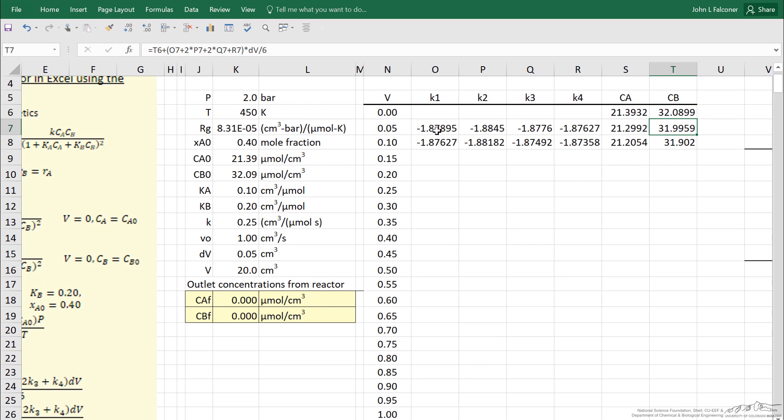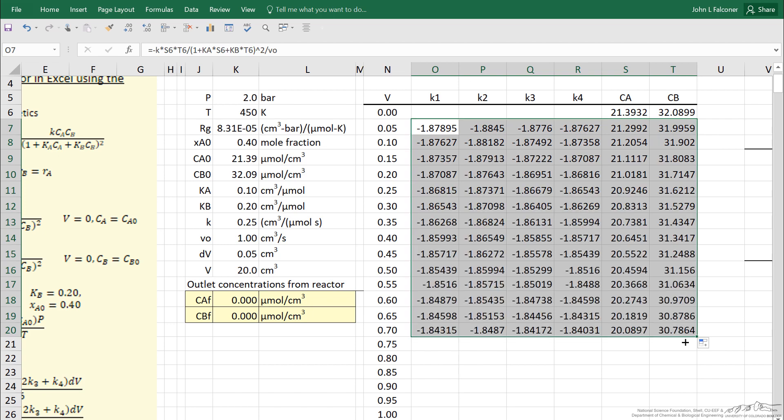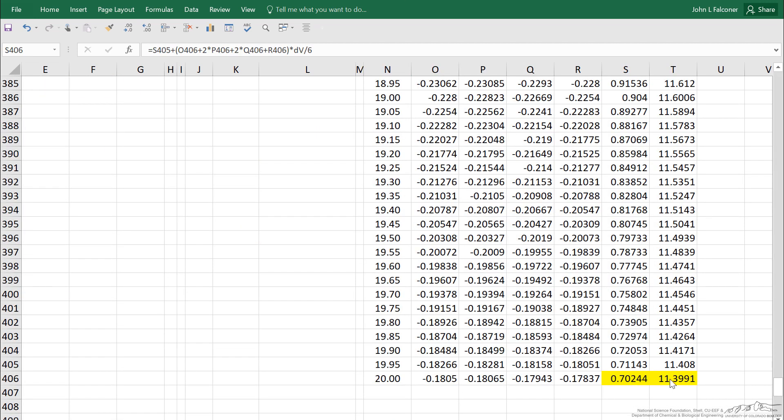Well then, what I've done to solve the differential equation is just copy. I can just copy this—and I won't do this while you're watching—I can copy this all the way down to the volume of 20 cubic centimeters. Let me pause and do that. The values for CA and CB in yellow, I'm going to step through to 20 cubic centimeters.